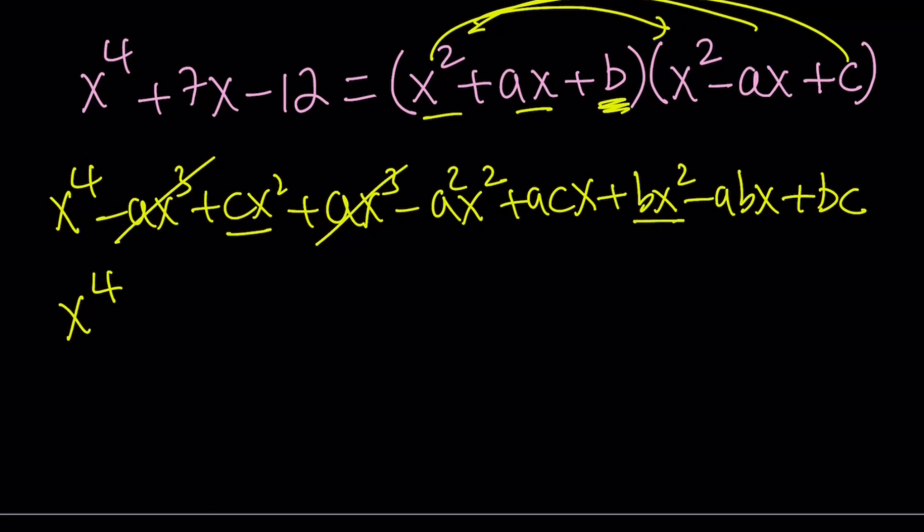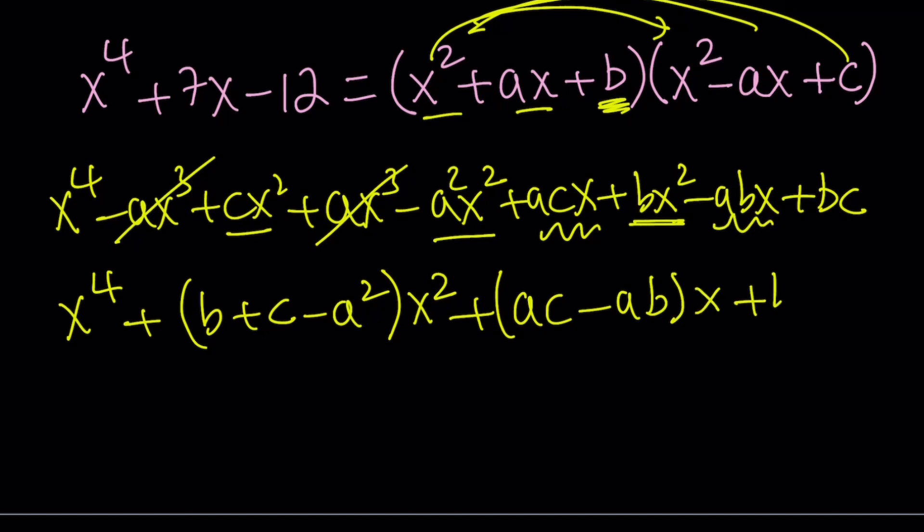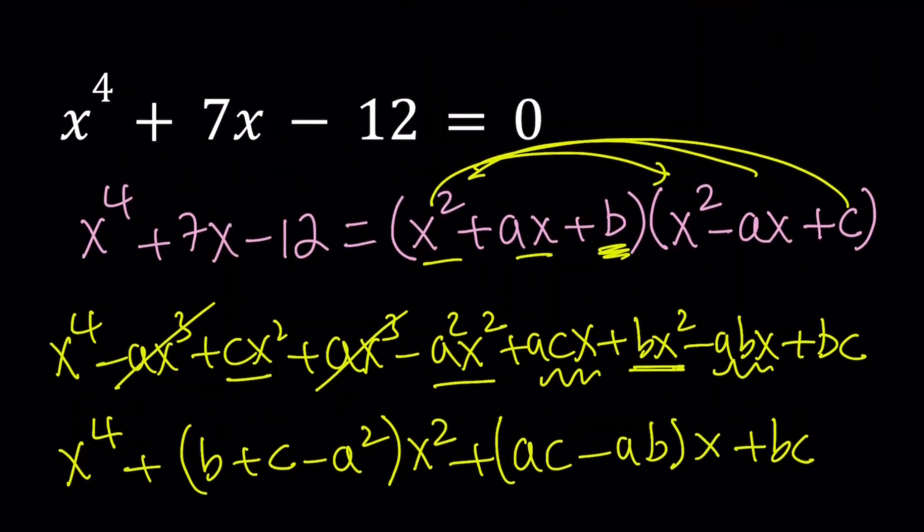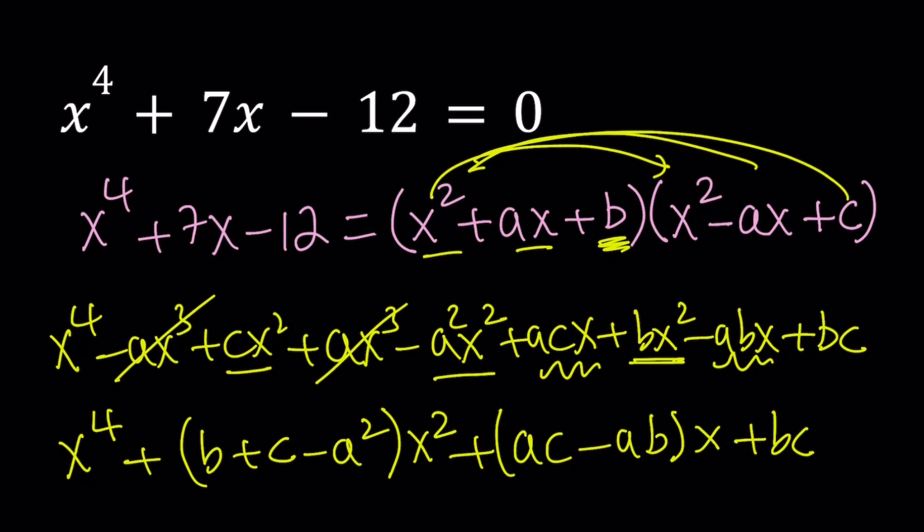x cubed cancels out. Let's arrange the x squared terms together. We have b plus c minus a squared as the coefficient of x squared. And then I have acx minus abx. And finally I have the bc. The whole thing is equal to x to the fourth plus 7x minus 12.